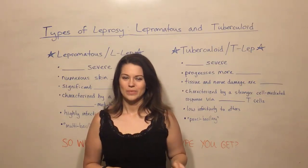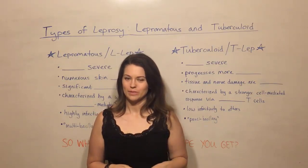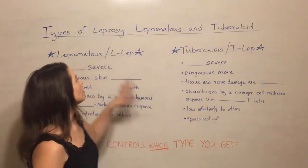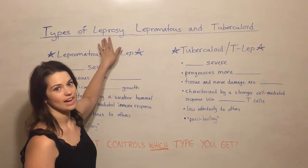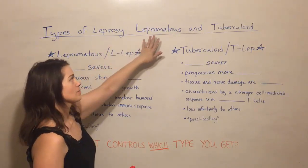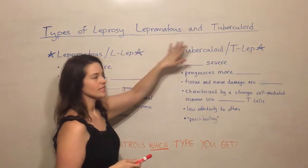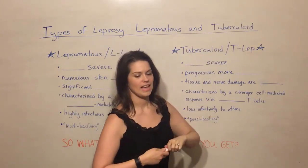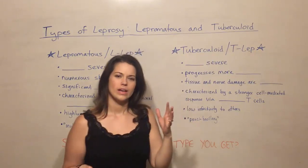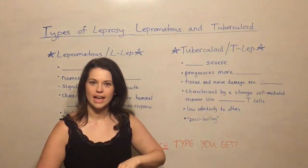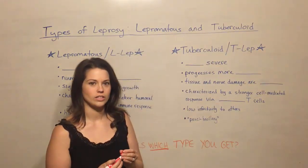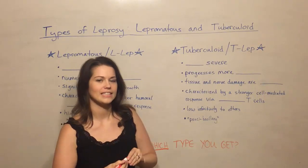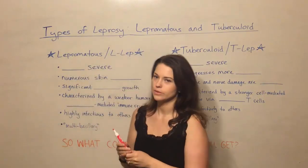Hi everyone and welcome to Biology Professor. Today we're going to be talking about two different types of leprosy — lepromatous leprosy and tuberculoid leprosy — and how they are distinguished from each other and what factors control the progression of disease in both of those types.